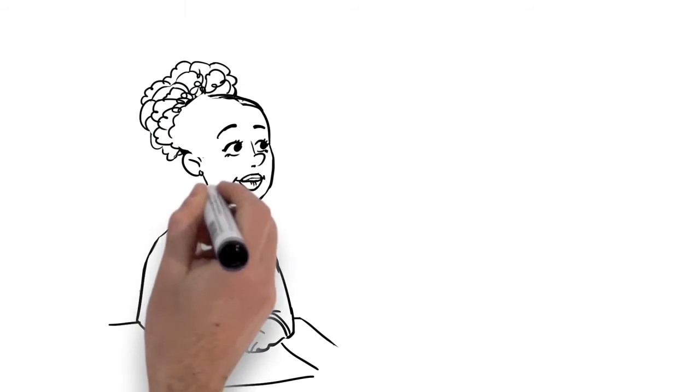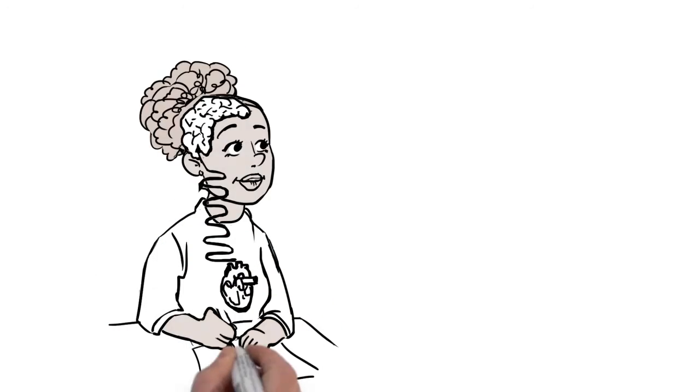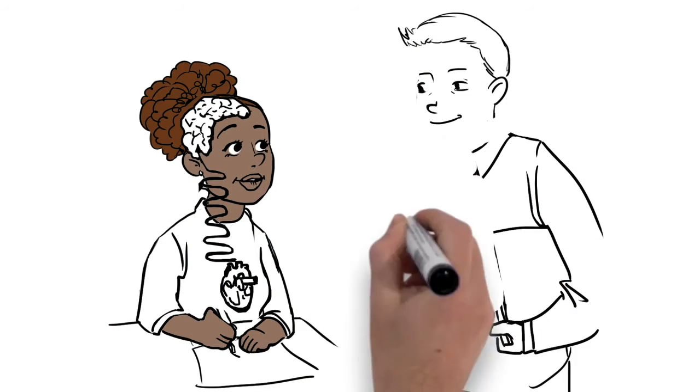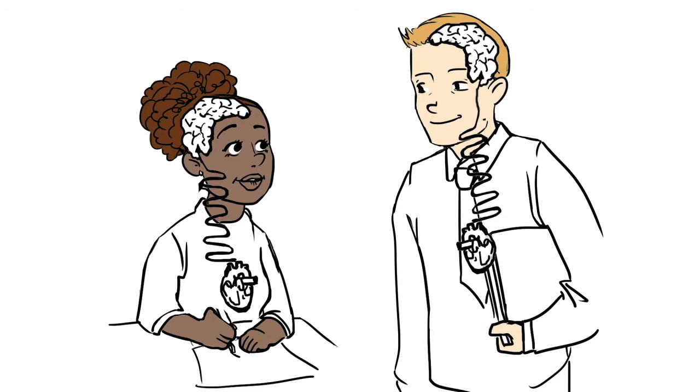Here's the bottom line. Scientifically speaking, when we are in a coherent state, the neural signals the heart sends to the brain improve the functioning of brain centers involved in decision-making, creativity, and how we perform.